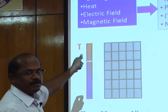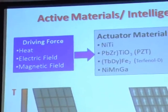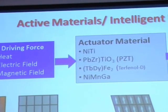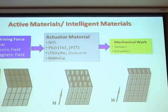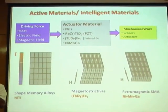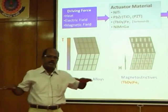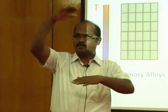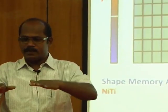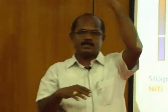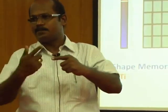Heat is one of the driving forces used in nickel-titanium. Basically, shape memory alloy is an alloy which retains its original shape even after severe deformation, because of the presence of two phases: the martensite phase, which is a low-temperature region, and the austenite phase, which is a high-temperature region. When the material is heated it transitions upward, and when cooled it comes back down — this is a cyclic process.